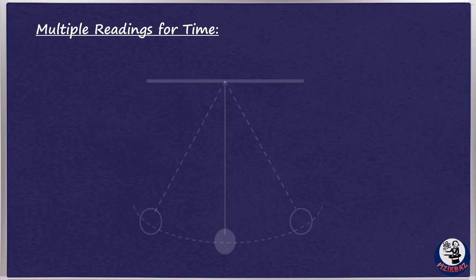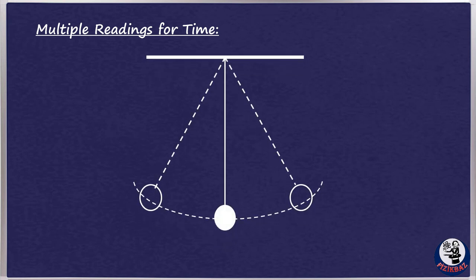This process of taking a reading of a large number of values and then dividing by that number is a good way of getting accurate values for small figures, including, for example, the time period of a pendulum. For example, measure the time taken for 10 swings and then divide that time by 10.